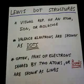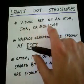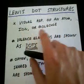So basically what a Lewis dot structure is, at its very basic, it's a visual representation of an atom, an ion, or a molecule.